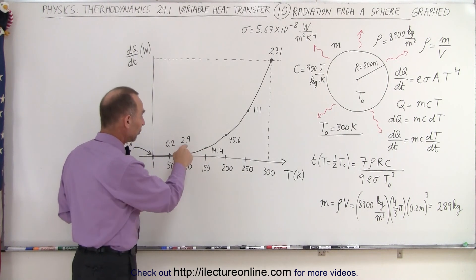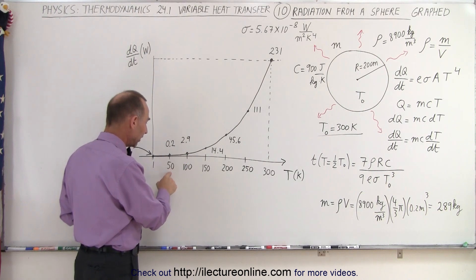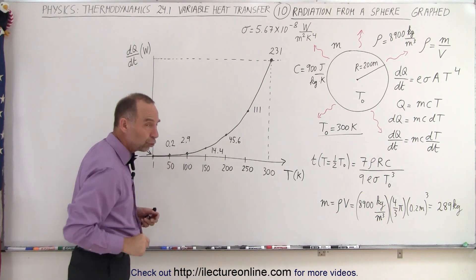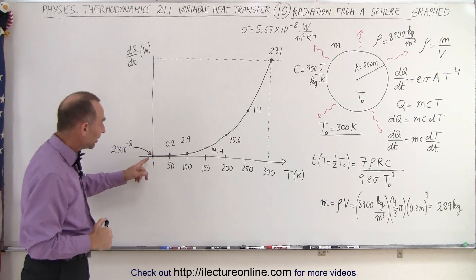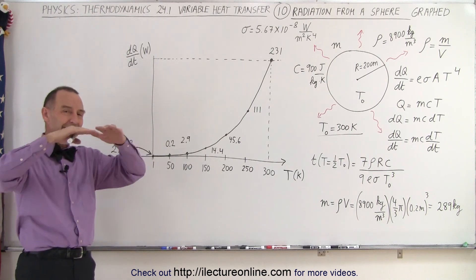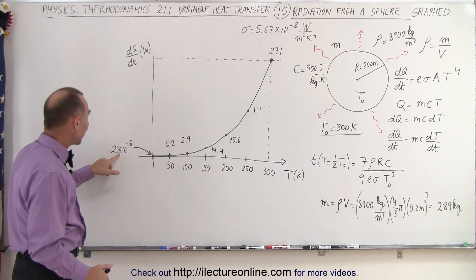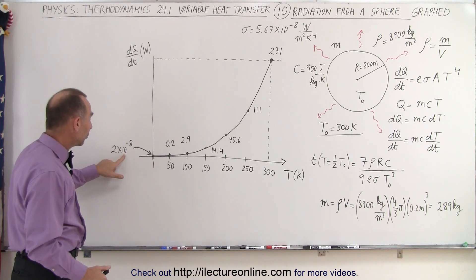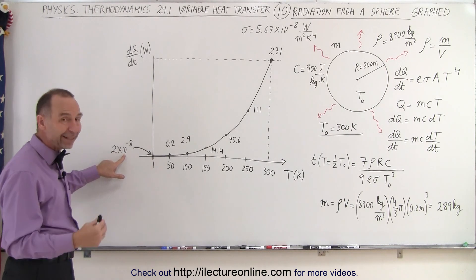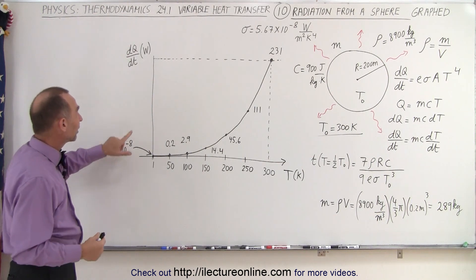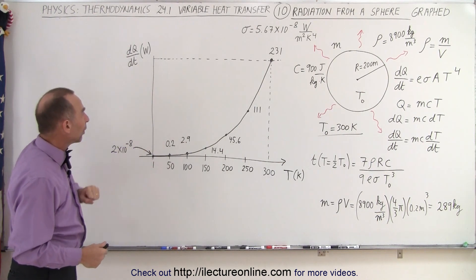At 100 Kelvin, the radiation would be down to 2.9 joules per second. At 50 Kelvin, it would be down to 0.2 joules per second. And if it was just 1 Kelvin above absolute zero, and let's say the surrounding was at absolute zero, then the rate would be at 2 times 10 to the minus 8, which is 20 billionths of a joule per second at 1 Kelvin.